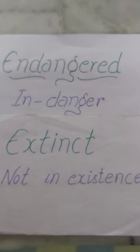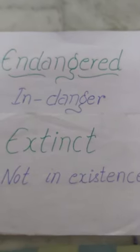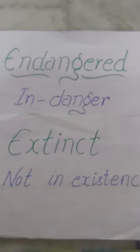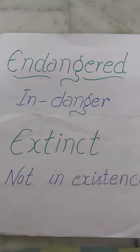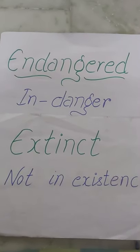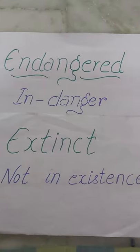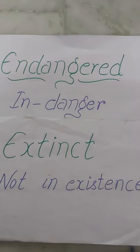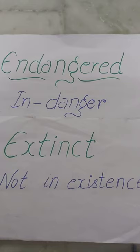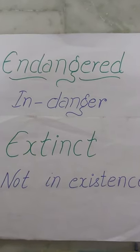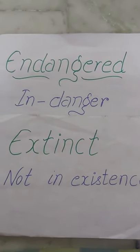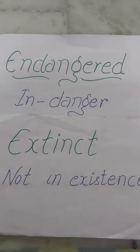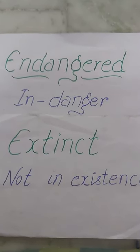Another word is 'endangered'. Endangered means those animals which are in danger of getting extinct. You must have heard from your parents or from the news about white tigers. White tigers are now coming in the category of endangered animals, meaning they are at risk of disappearing.